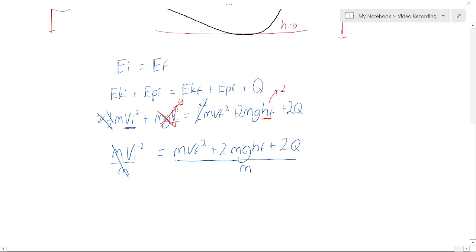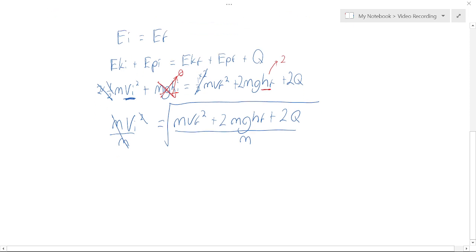Maybe you can see my last step is to square root both sides. If I square root this side, this will go away. vi squared becomes vi. And I get a square root here.